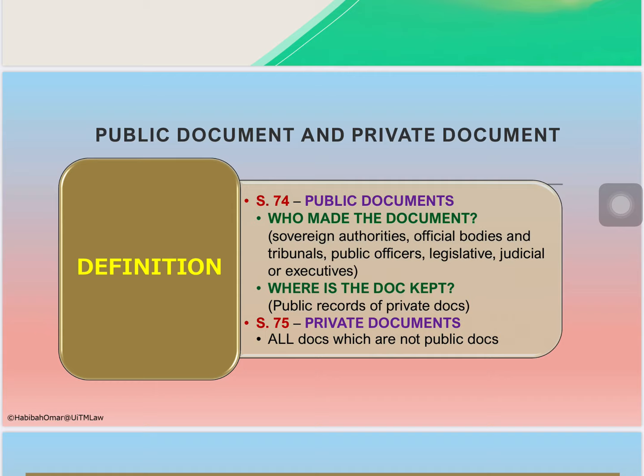For example, a company may have an audited statement of accounts, which is a private document. But the moment you file it at the CCM or SSM — the Companies Commission of Malaysia — people who have an interest can make a search and obtain that record. The moment that happens, the private document filed at the SSM or CCM becomes a public document. So under section 74, you ask: who made the document, and where is the document kept?